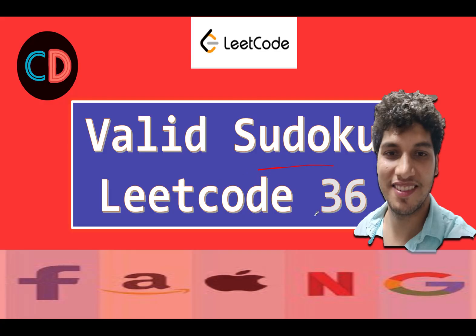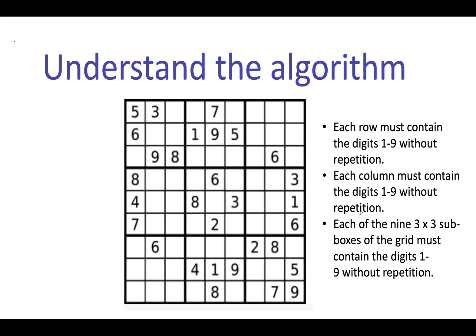Valid Sudoku, LeetCode 36. Let's talk about the rules again. Each row must contain the digits 1 to 9 without repetition. So this is the first row and we need to check whether in this row there exists any repetition or not. How can we do that? You can create a hash set of strings.